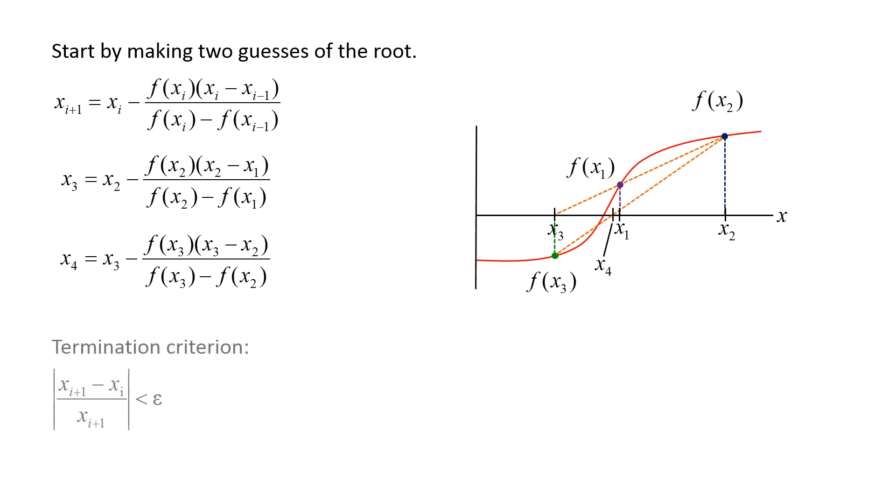The termination criterion for the secant method is the same as in the Newton-Raphson method. The secant method is terminated when the percent difference between the next root estimate, xi plus 1, and the current root estimate, xi, is less than a small value epsilon, which is set by the user.